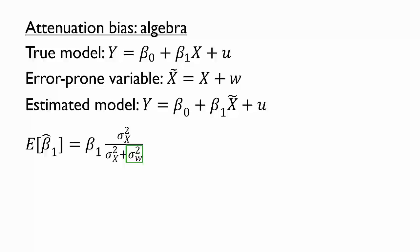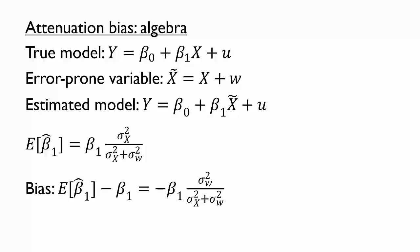Perhaps less obvious is that the greater the variance of the independent variable, the smaller this fraction, at least if the variance of the measurement error is unaffected. More broadly, attenuation is more severe when the variance of the measurement error is large compared with the variance of the independent variable that is measured with error. Finally, we could write an expression for the bias — that is, how much the estimated beta 1 differs on average from the true beta 1. The negative beta 1 reminds us that the bias is always towards 0: positive slopes will get smaller, while negative slopes will get more positive. The fraction again reminds us that the bias is greater when the measurement error is large compared to the scale of the variable itself.